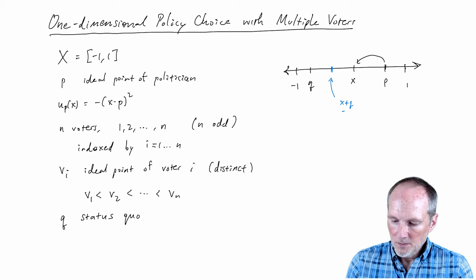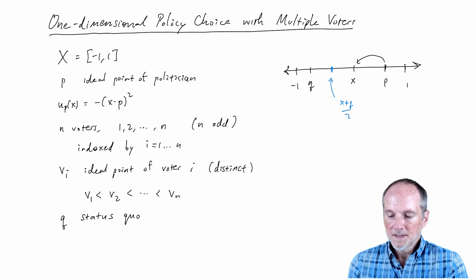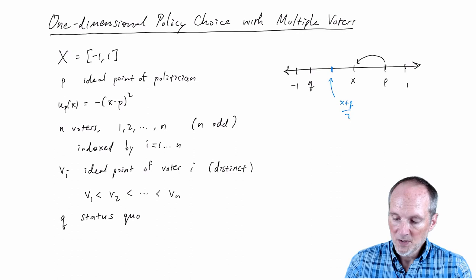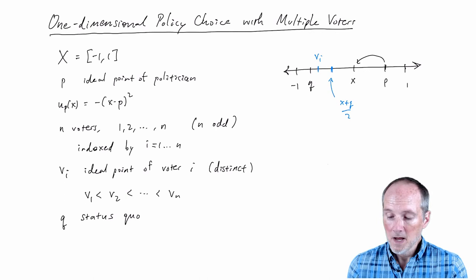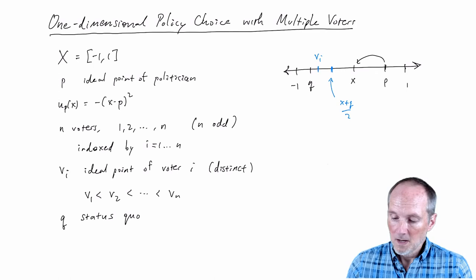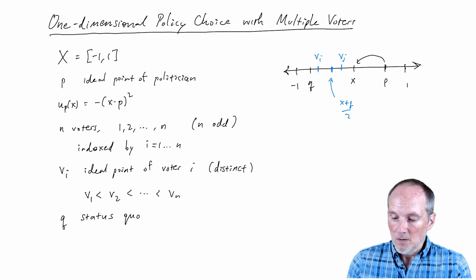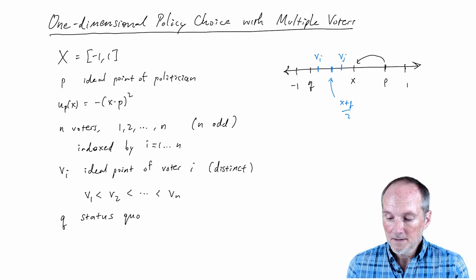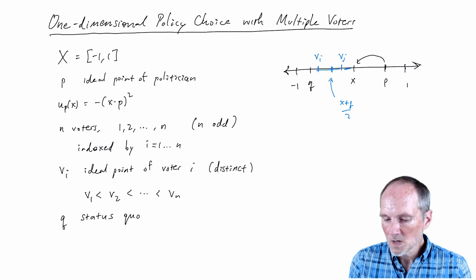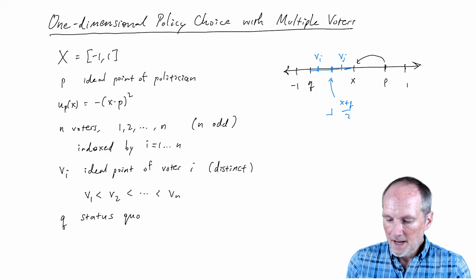Suppose you are a voter to the left of that midpoint — call them voter i. Clearly the status quo is closer to their ideal point than the proposal, so they vote for the status quo. Now suppose voter j is to the right of that midpoint — the status quo is further from them than the policy proposal, so they're closer to x than to the status quo. Any voter to the left of that midpoint votes for the status quo; any voter to the right votes for the policy proposal.